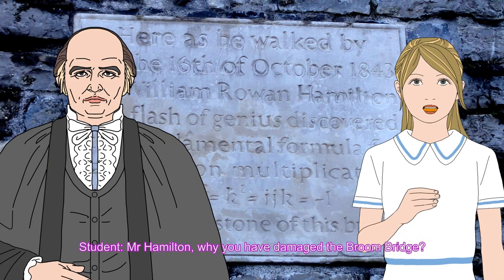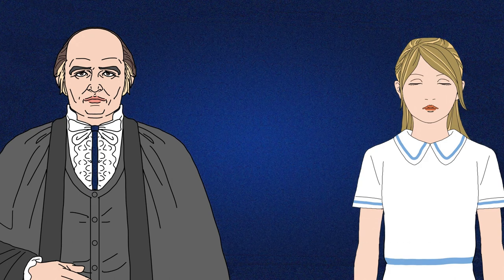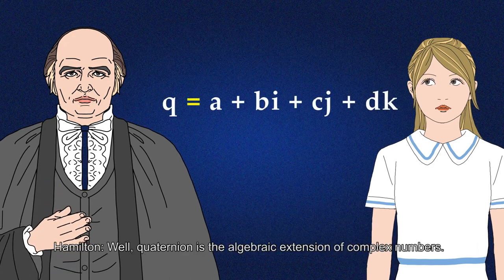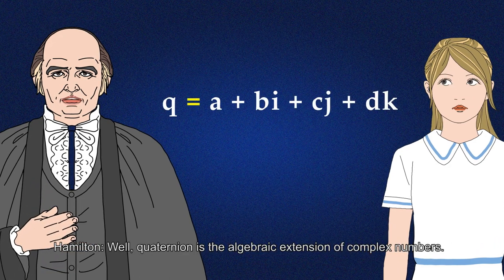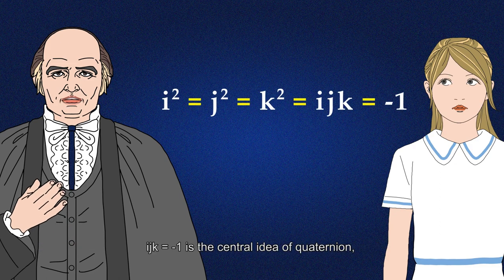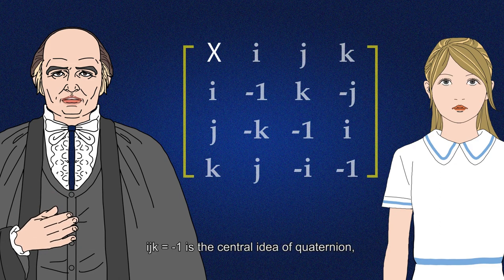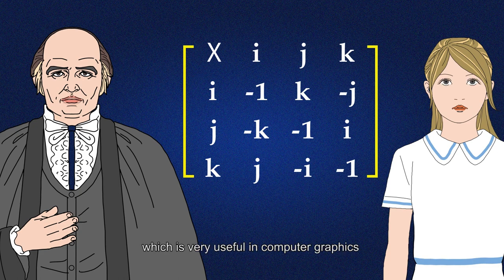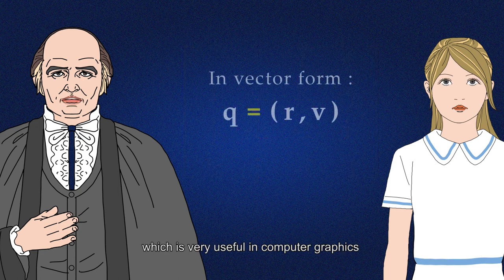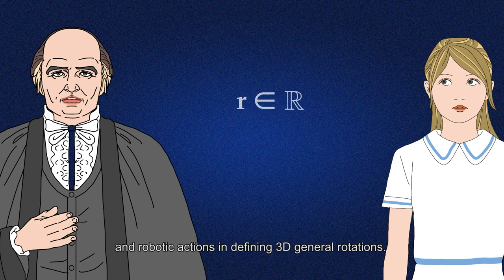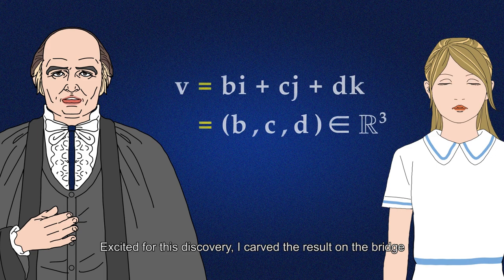Mr. Hamilton, why have you damaged the Brim Bridge? Well, a quaternion is the algebraic extension of complex numbers. I, J, K equals minus one is the central idea of quaternions, which is very useful in computer graphics and robotic actions in defining 3D general rotations. Excited for this discovery, I carved the result on the bridge.